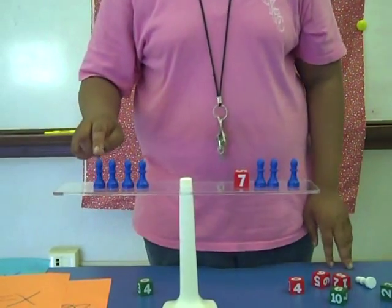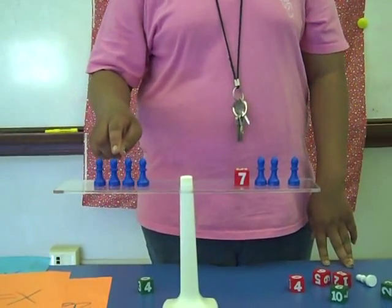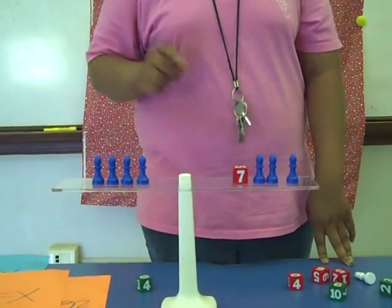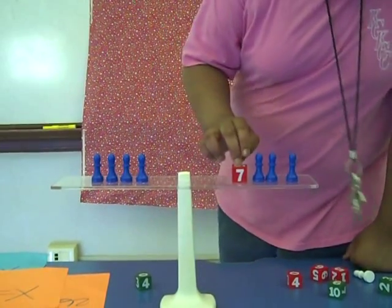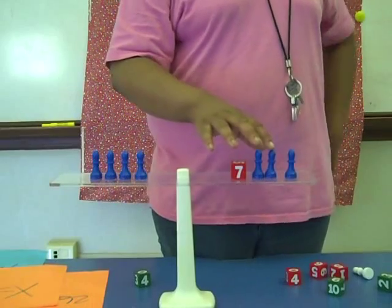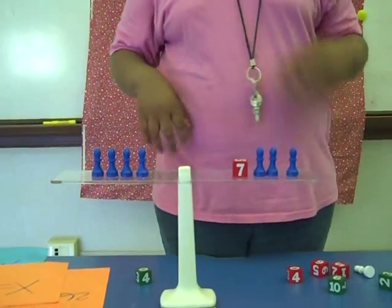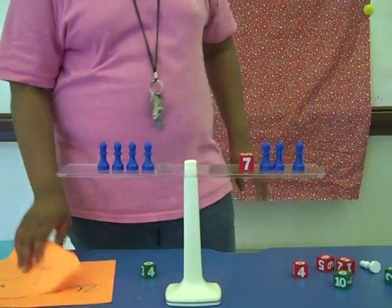Then it will be 7 plus 7 equals 14, plus 7 is 21, plus 7 is 28. Then it will be 7 plus 7 is 14, plus 7 is 21, plus 7 is 28. So it equals 28.